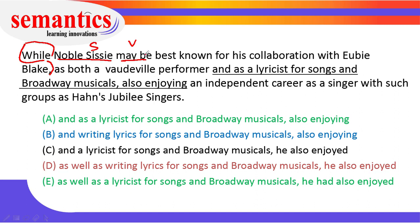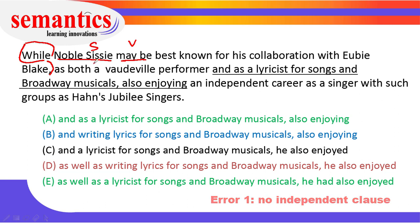Does this line point to a particular idea? It sounds incomplete — that's why it's the dependent clause. It needs an independent clause, which should have a main subject and main verb. 'As both a vaudeville performer and as the lyricist' — this is in a comma, so let me bracket it out. This again is not my independent clause because there is no main subject and main verb. Also 'enjoying an independent career all the way up to singers' — there is no main subject or main verb. So one glaring error in this sentence is an absence of an independent clause.